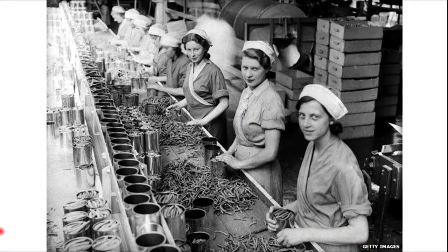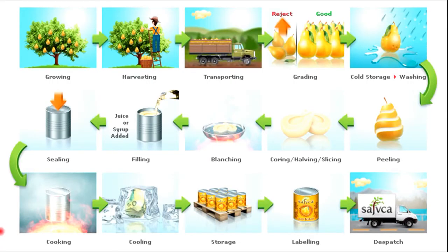The canning process was introduced about two centuries ago and for a long time it has been one of the main means of food preservation. Conventional canning is a method of food preservation in which food is placed in hermetically sealed containers and heated to destroy microorganisms.